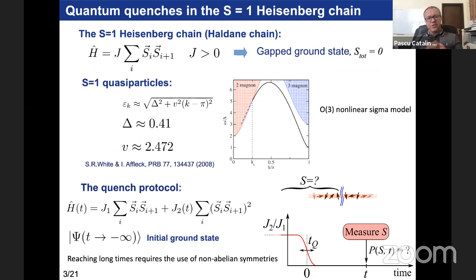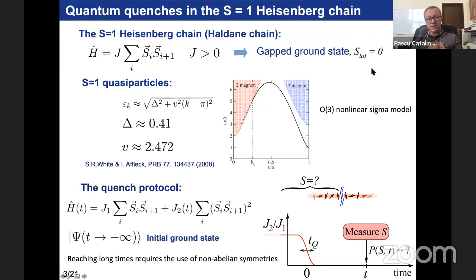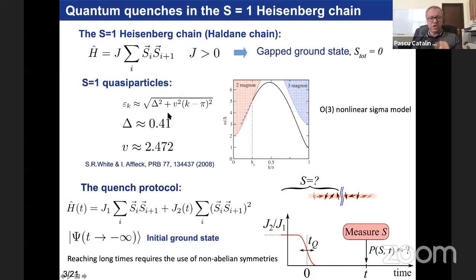The Hamiltonian is the S=1 Heisenberg chain with J positive — an anti-ferromagnetic chain. This is known to have a gapped ground state. In the absence of magnetic field, the ground state has total spin S=0 — a singlet many-body state. The quasi-particles of this model are well described by the O3 nonlinear sigma model, and the quasi-particle spectrum is relativistic with a gap of approximately 0.41J. The light velocity for the quasi-particle is about 2.4 in units of J times the lattice distance.